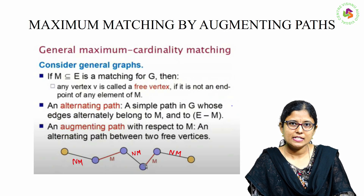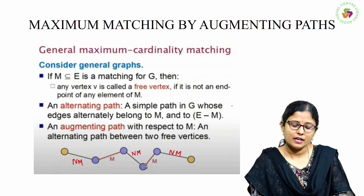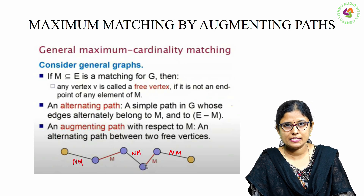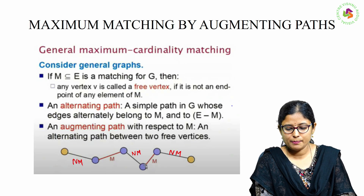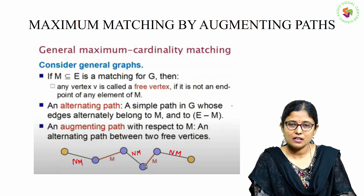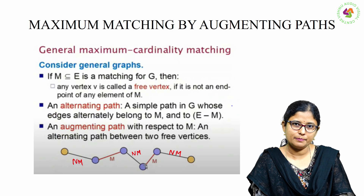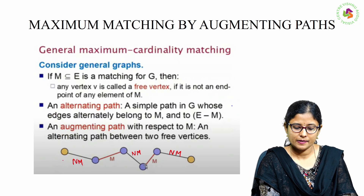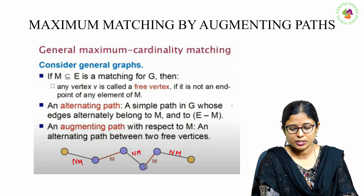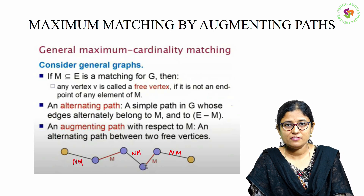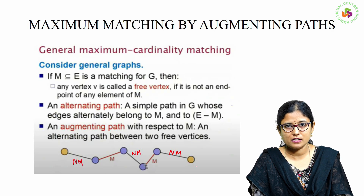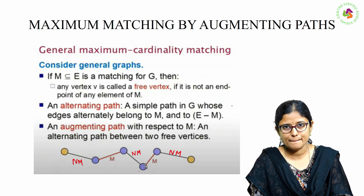What is an augmenting path then? An augmenting path with respect to M is an alternating path between two free vertices. This is an augmenting path because the path is an alternating path and also the two end vertices are free vertices, since these two vertices are not involved in the matching.